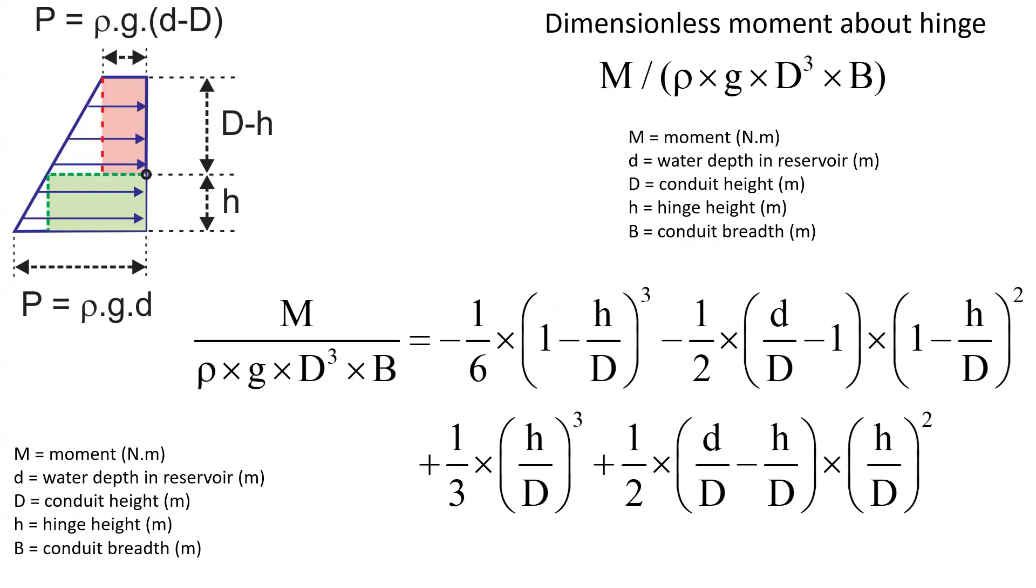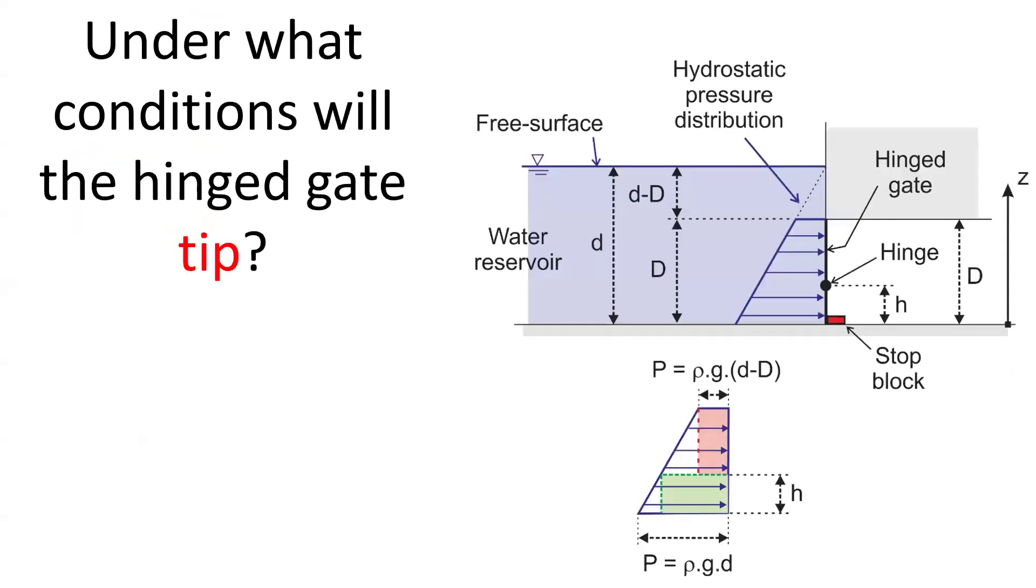Now, let us look at this complete solution. Under what condition will the hinge gate tip? The hinge gate will tip when the moment about the hinge is negative.